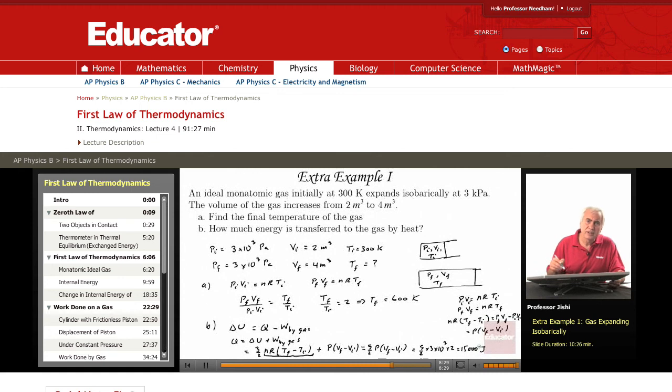We could arrive at this answer in either way. Here's another method. The heat added, since the expansion is done under constant pressure, is just n CP delta T.